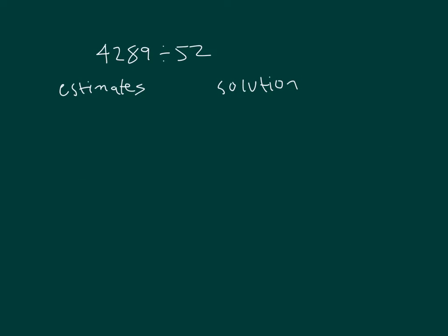Here is our next problem: four thousand two hundred eighty-nine divided by fifty-two. We can't divide those four-thousands by fifty-two. We can't divide those forty-two-hundreds by fifty-two. What we can divide by fifty-two is four hundred twenty-eight tens — so we're thinking four hundred twenty-eight tens, and we can divide that by fifty-two.